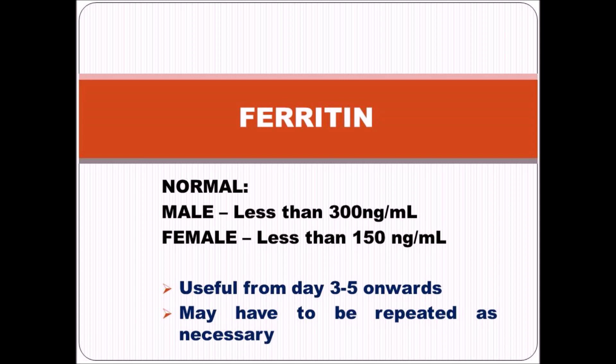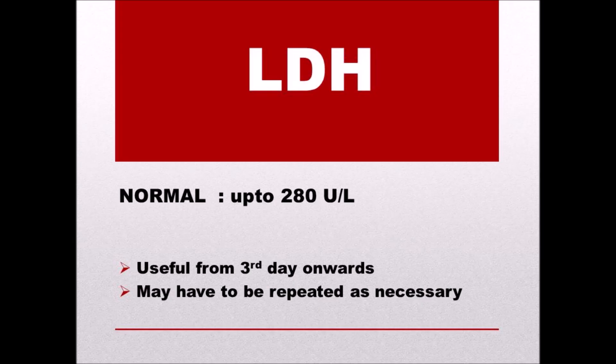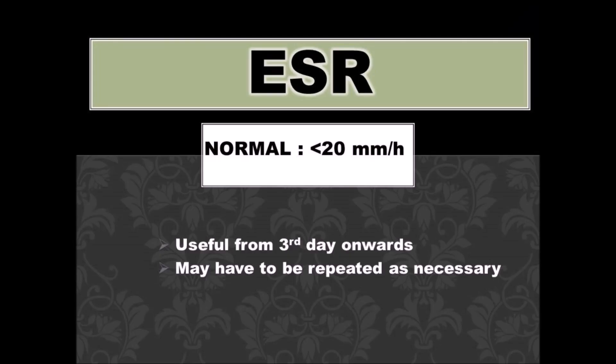Another marker is ferritin, which is the stored form of iron in the body, generally present in the liver, spleen, or muscles. The rise and fall of ferritin indicates treatment response. LDH is another marker found in the blood due to breakdown of body cells; its level also indicates COVID severity.